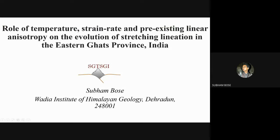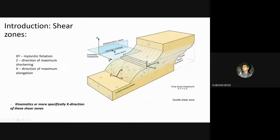Whenever we use the term stretching lineation, the first thing that comes to most people's mind is a ductile shear zone that constitutes these basic elements: the mylonitic foliation representing the XY plane of the strain ellipsoid, the direction of maximum shortening representing the Z direction, and the X direction representing maximum elongation or the finite extension direction. In predominantly simple shear zones, determination of the kinematic X direction is especially important as it approximates the transport direction, particularly in domains where the mylonitic foliation curves almost into parallelism with the shear plane.